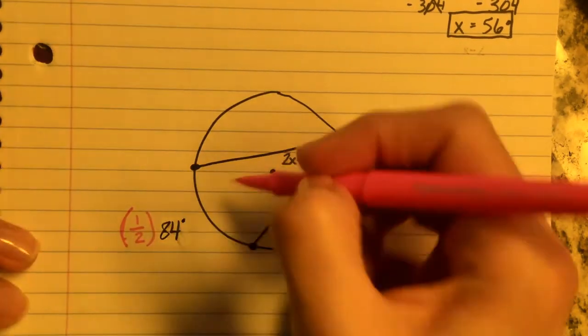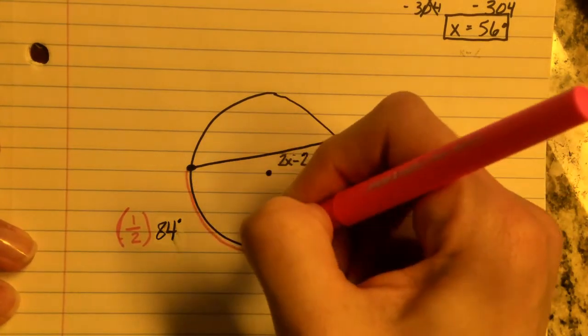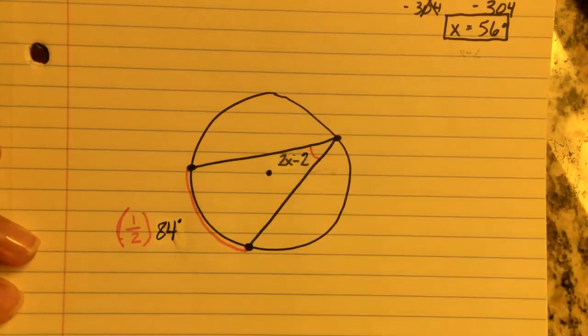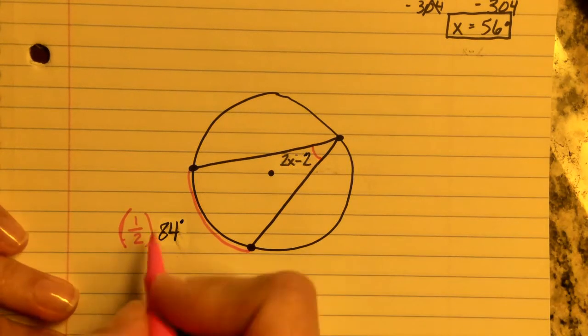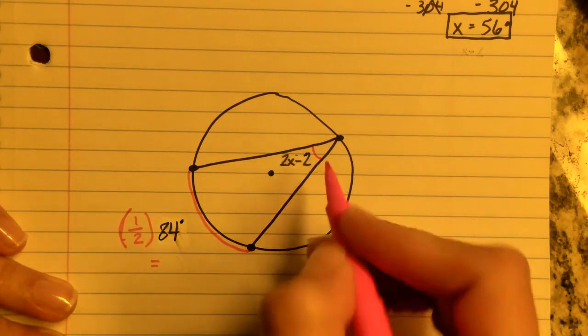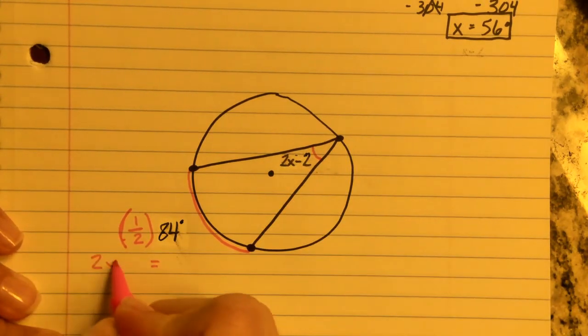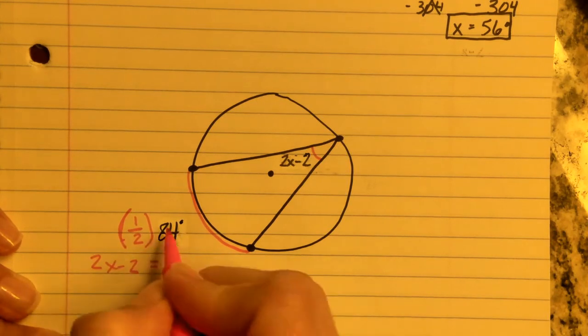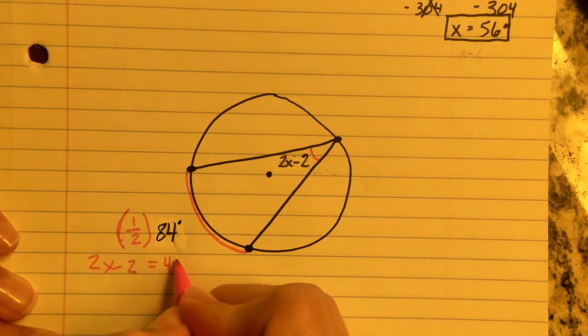And set it equal here. Because remember, this arc is going to be half the measurement. So if we take half of this, we find that 2X minus 2 needs to be set equal to half of 84, which is 42.